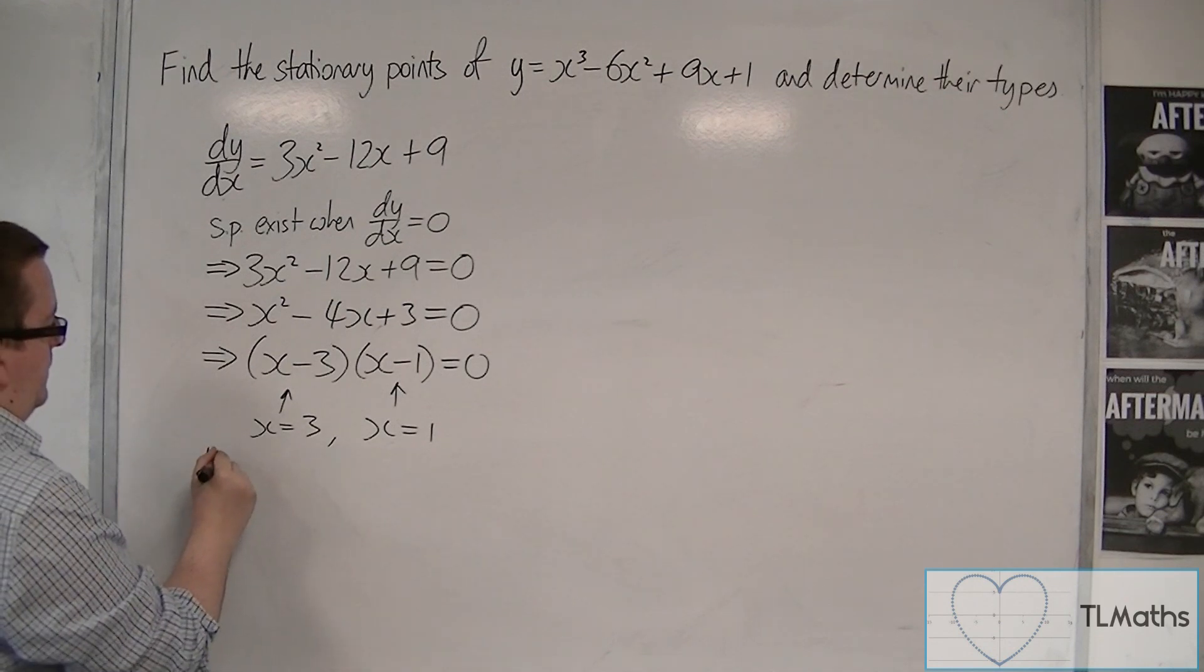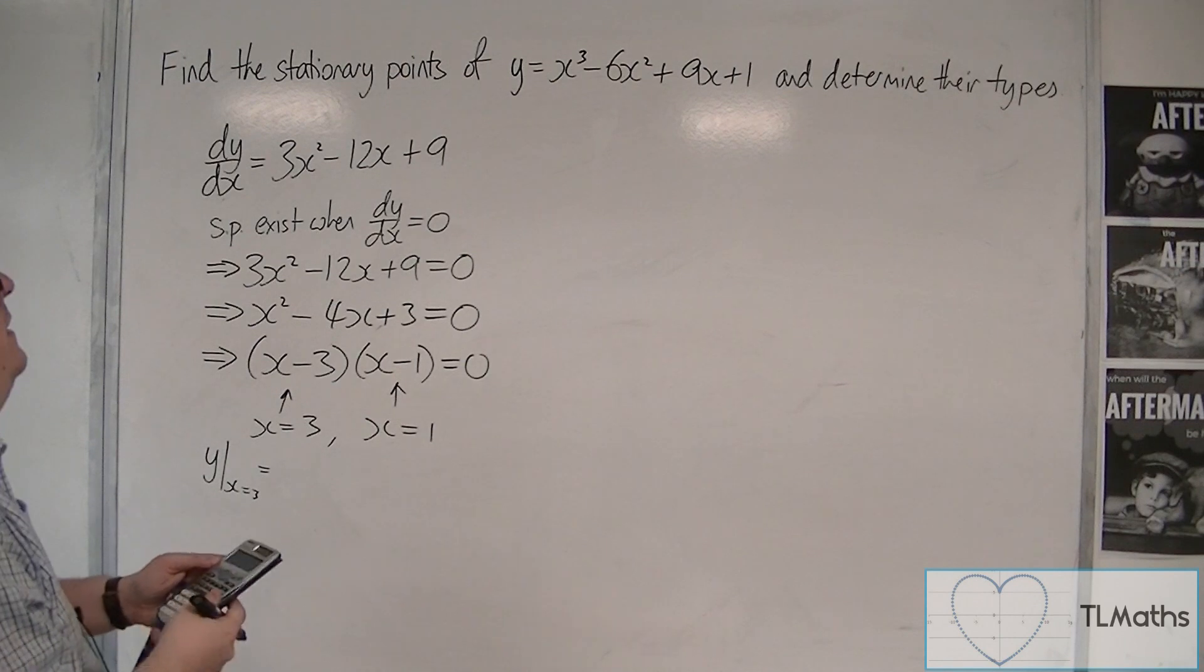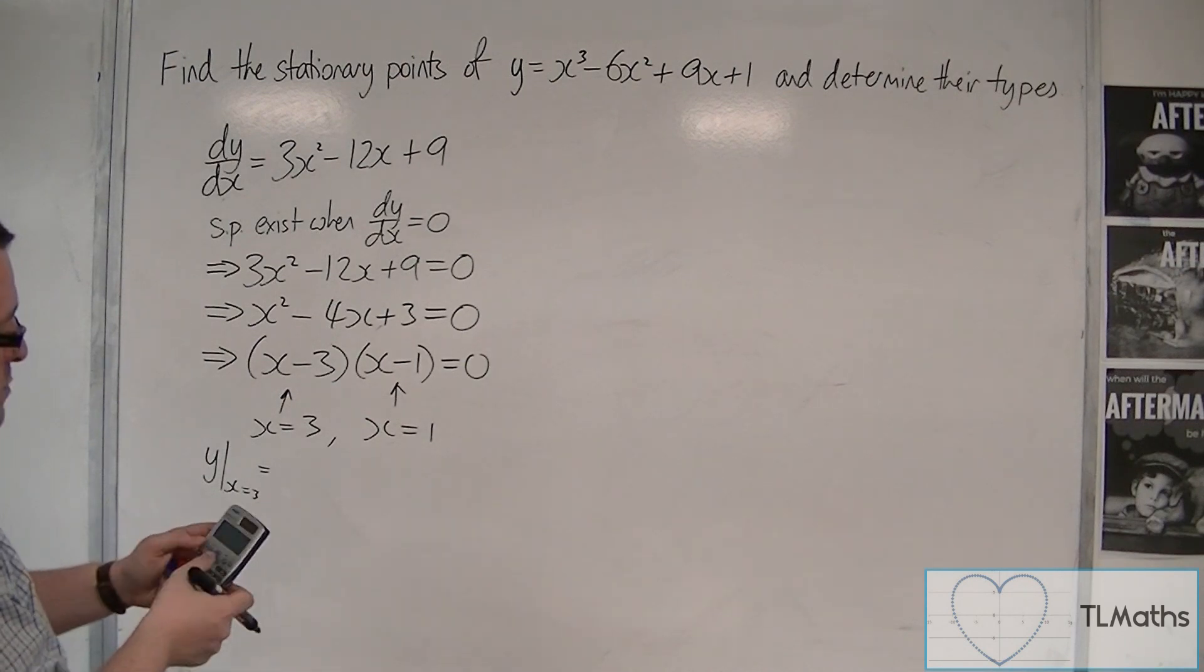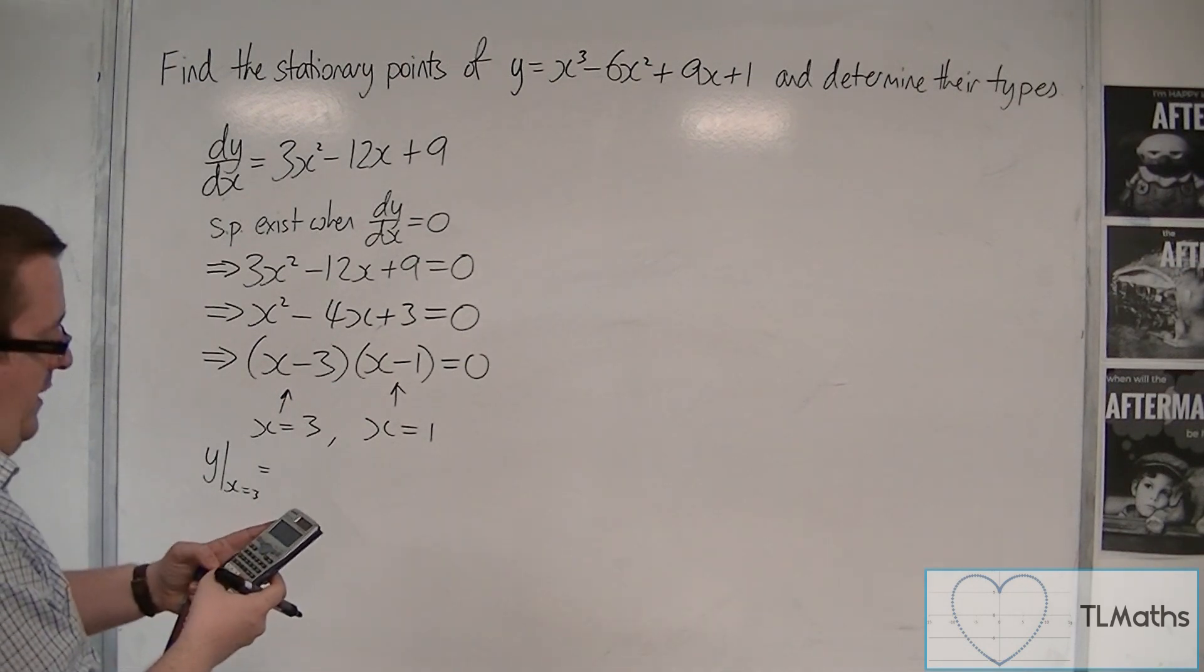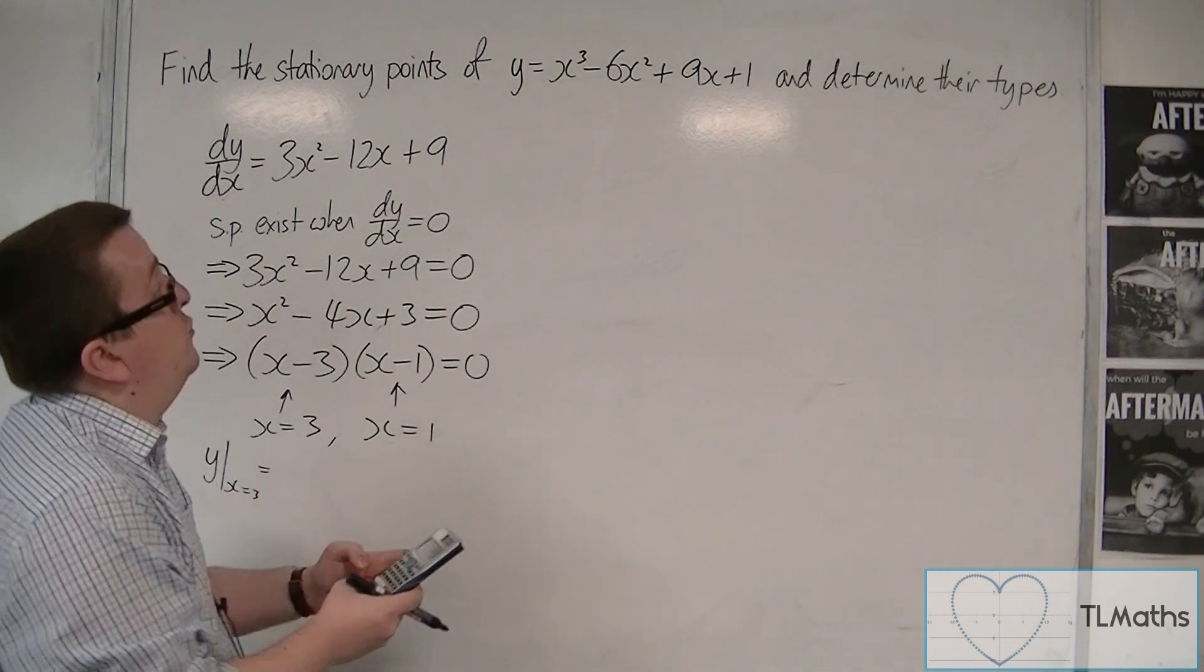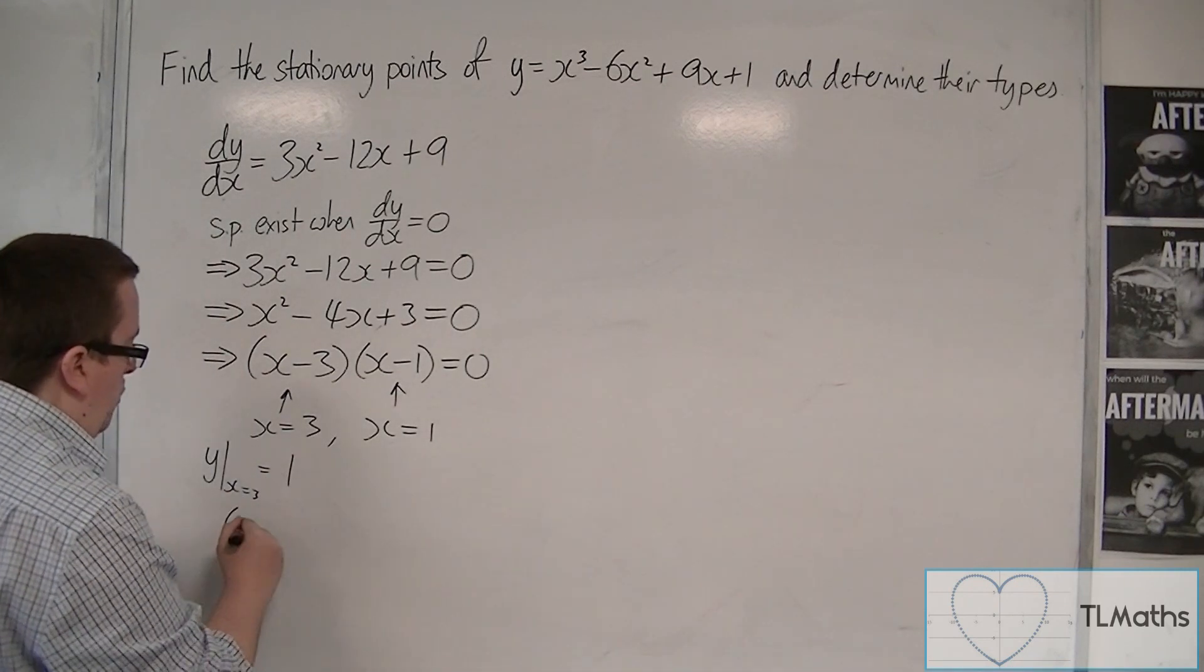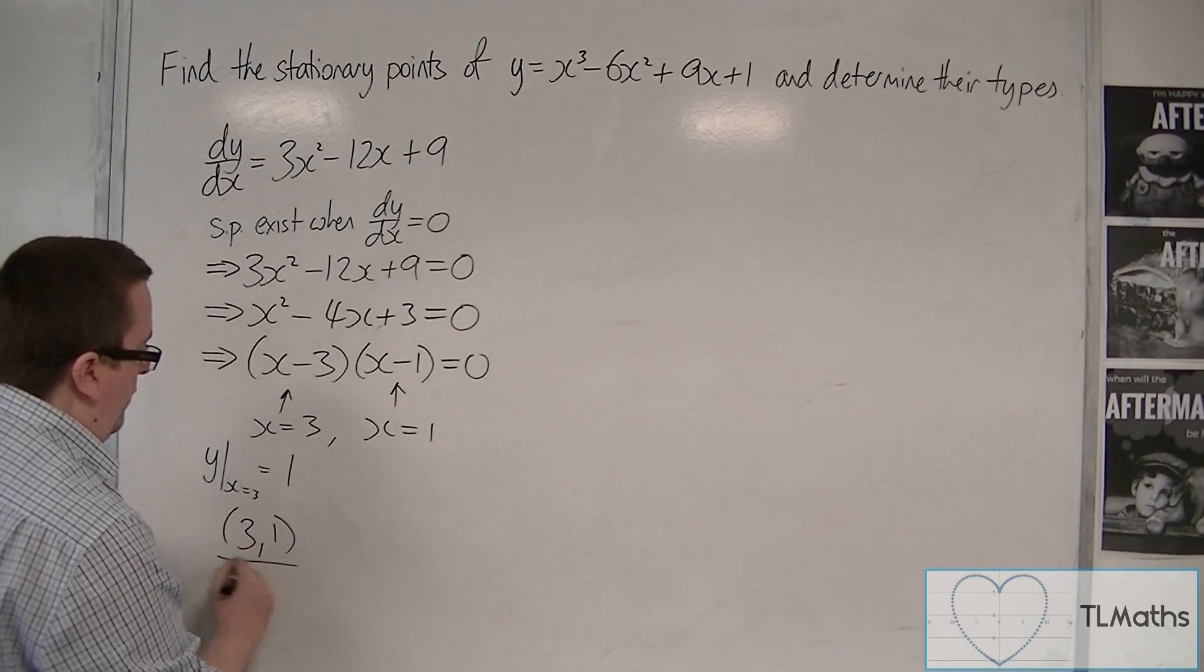So y, when x is 3, substituting in, is going to be 3³ - 6(3²) + 9(3) + 1. So that gets me 1. So I know that one of the stationary points is at (3, 1).